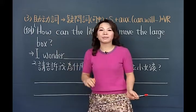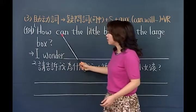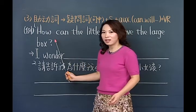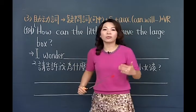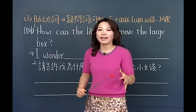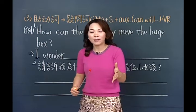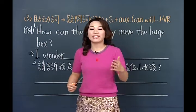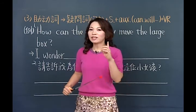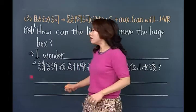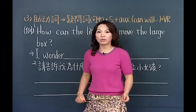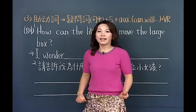他能够吗？他用什么方法能够搬动这么大的箱子呢？所以你可以发现这里的Can是助动词，表示的是一种能力。你不能说因为它是助动词你就把它去掉——不行，它有独立的意思。